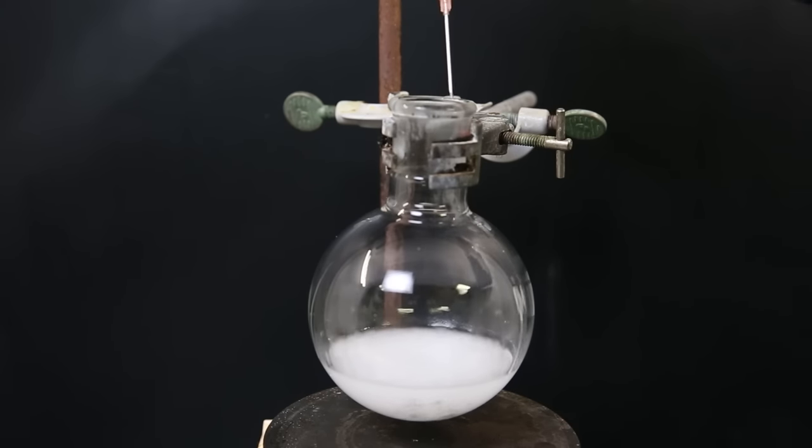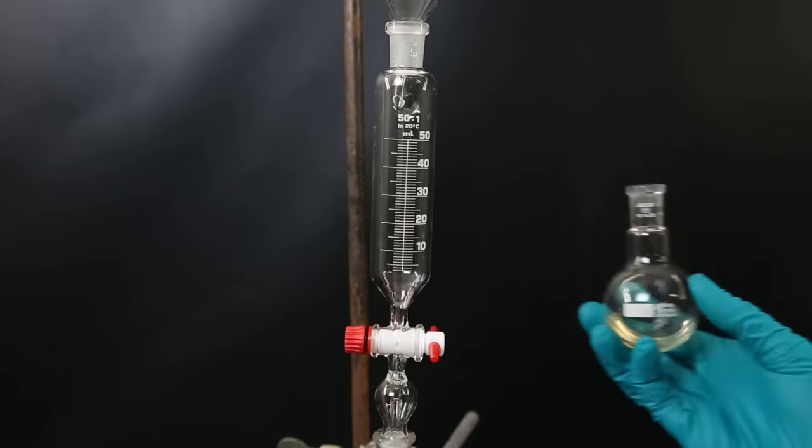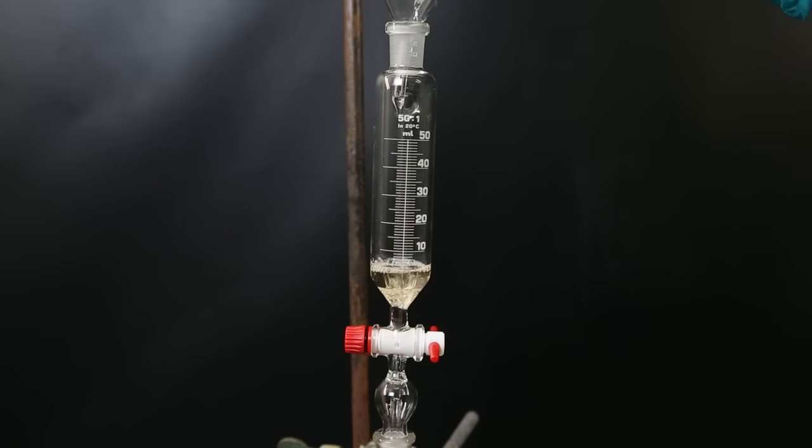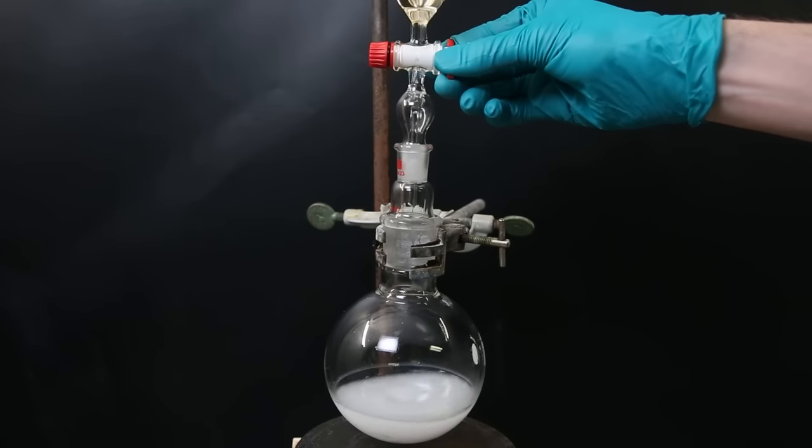I then wash the sides and the neck of the flask with some more ether. Now I attach a dropping funnel and pour in all of the tributyl tin chloride. I then open the dropping funnel and drop-wise add the tributyl tin chloride to the flask.